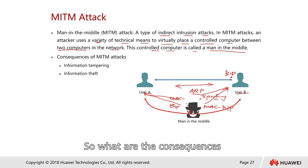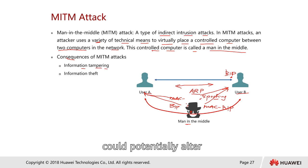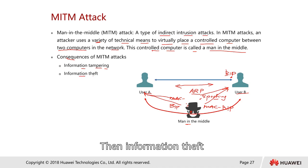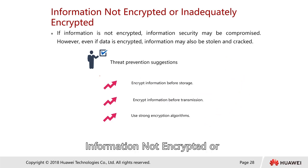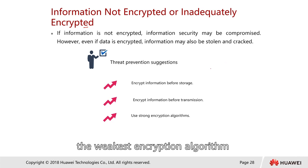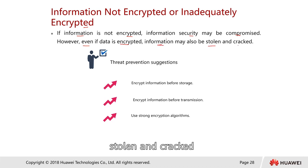The consequences of a MITM attack include information tampering — the attacker can alter your information before A and B see it, whether it's email, a website, or anything else. Information theft is also a risk, where the attacker reads the content of your communications. Inadequate or absent encryption makes this easier, and even encrypted data can be stolen or cracked if a weak algorithm is used.